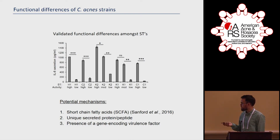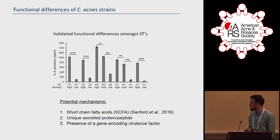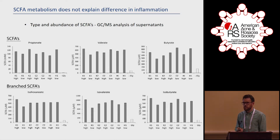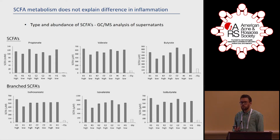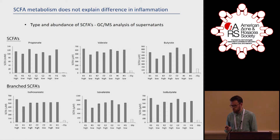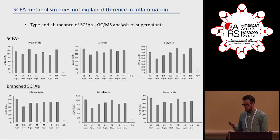We know from our lab that short-chain fatty acids promote inflammation, so we analyzed the supernatants of these functionally distinct strains by GC-MS. We found no difference in either the type or the abundance of short-chain fatty acids produced — including the major short-chain fatty acids and some more uncharacterized branched short-chain fatty acids. So instead, we think it's probably a protein or peptide that could be mediating this response.